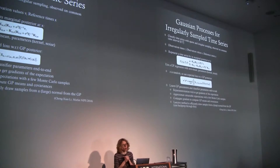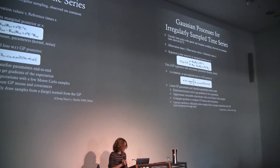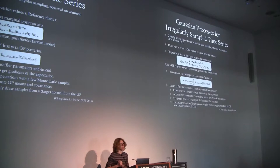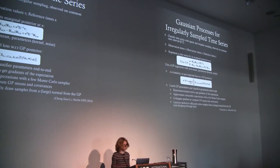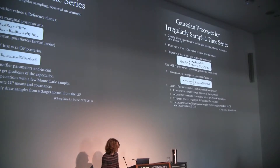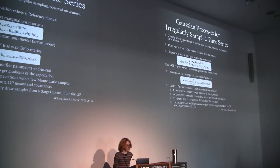We have a bunch of tricks to make inference faster for end-to-end learning. This work builds off the Li and Marlin paper from NeurIPS last year. We use the reparameterization trick, approximate intractable expectations with Monte Carlo samples — we found one sample isn't enough, so we use about 10 — and we use analytic gradients to get the GP means and covariances, using the Cholesky method to draw samples from a multivariate normal.